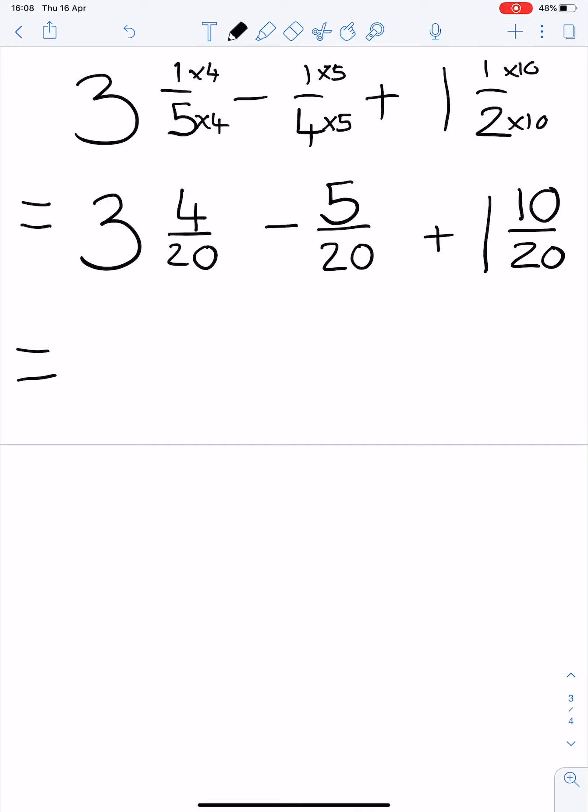Now we have like denominators and we can now do the sum. We'll do the subtraction part first. 3 minus nothing is 3. 4 cannot subtract 5, so we're going to have to borrow from the 3. So let's erase this 3.